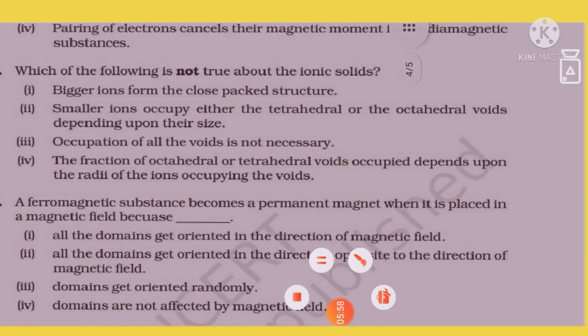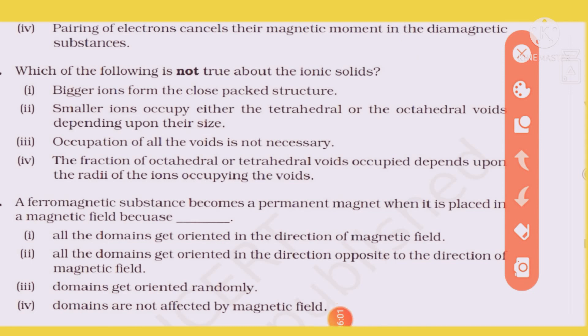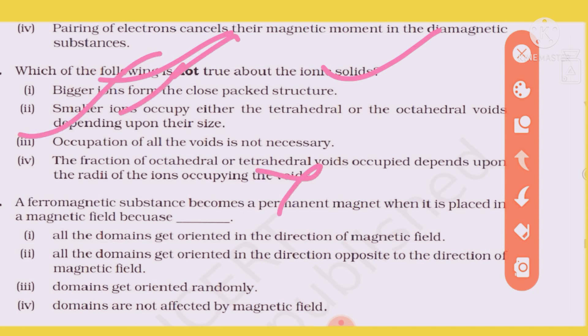Which of the following statement is NOT true about ionic solids? In ionic solids, the smaller ion occupies either the tetrahedral or octahedral void depending on its size. Not all voids are necessarily occupied — the smaller ion fits into tetrahedral or octahedral positions based on the radius ratio.